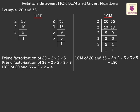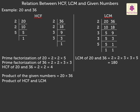Now, to understand the relation between HCF and LCM, we need to find the product of the given numbers and the product of the HCF and LCM obtained. So, the product of the given numbers is equal to 20 × 36 which is equal to 720. And, the product of the HCF and LCM is equal to 4 × 180 which is equal to 720.